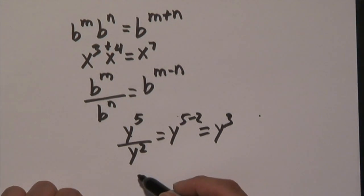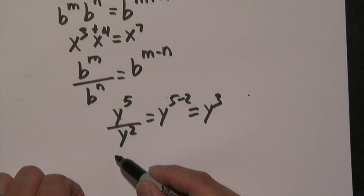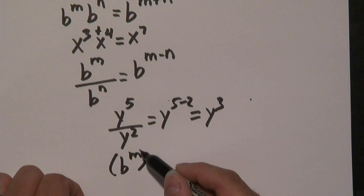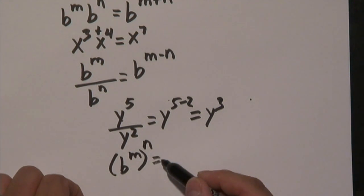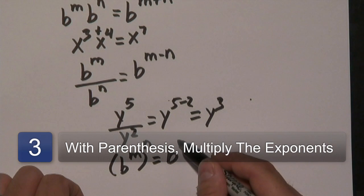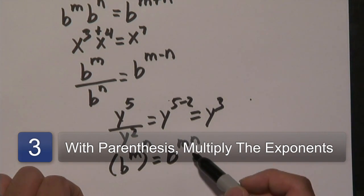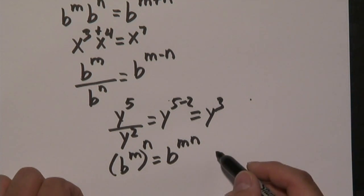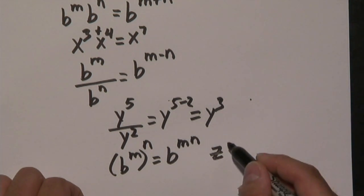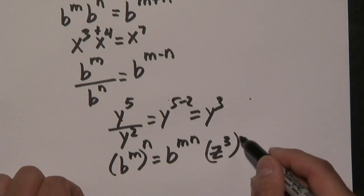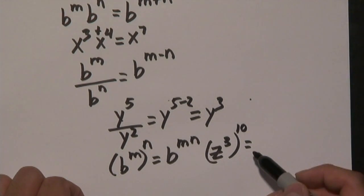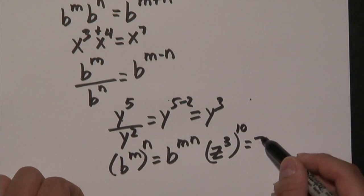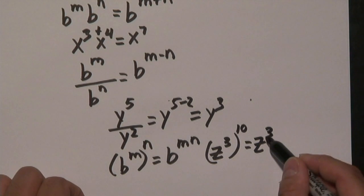And another common rule for exponents is if you have exponents right on top of each other, as in if you have b to the m raised to yet another power, then all you have to do there is multiply the two exponents side by side. In this case since there's only one base you don't have to worry about matching bases. So for example if you have z to the third all raised to the tenth power, all you do is take the three and the ten and multiply those together and three times ten is thirty.